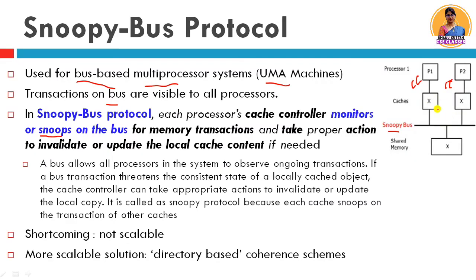The cache controller will invalidate or update the local cache as per the requirement. It allows all processes to observe and monitor if any transaction threatens the consistent state of local cache objects, and then the cache controller takes the proper or appropriate action to invalidate or update any local copy. That is why we call it the Snoopy Protocol — because each cache snoops on the transactions of other caches.